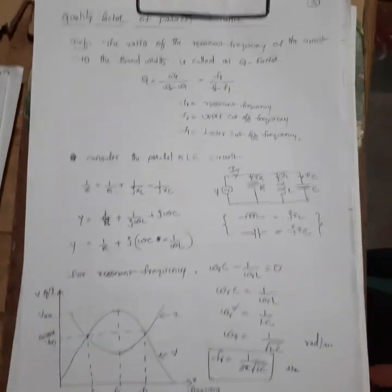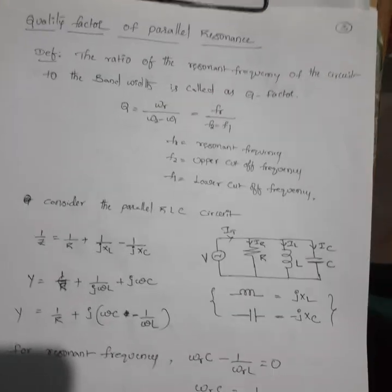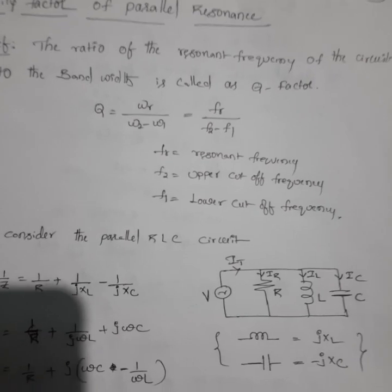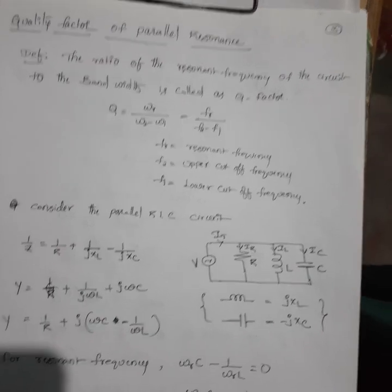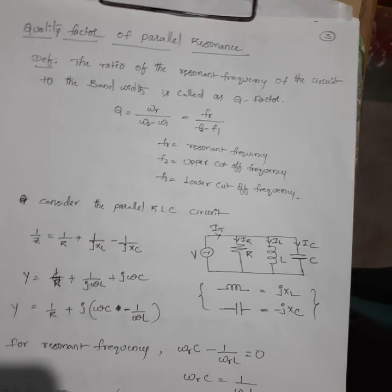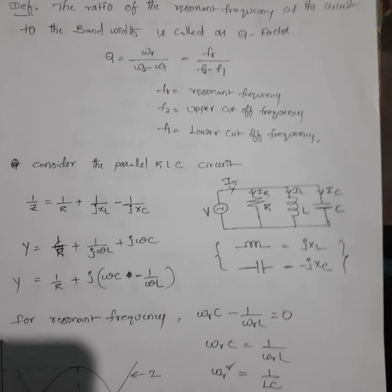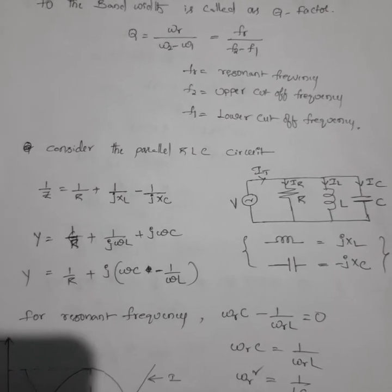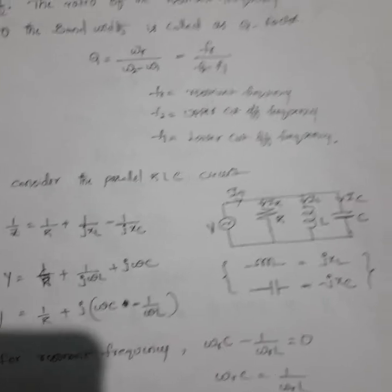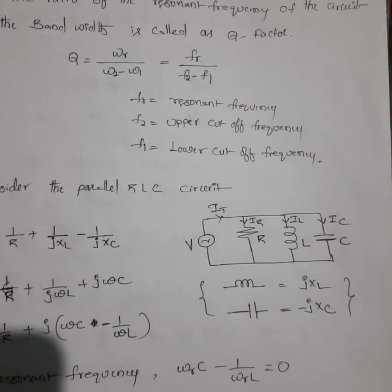Now, how to calculate the quality factor of any circuit. The quality factor is defined as the ratio of the resonant frequency to the bandwidth of the circuit. The resonant frequency is the frequency under resonance condition where the imaginary term equals zero, i.e., X_C equals X_L. The bandwidth is simply the difference between the upper cutoff frequency and lower cutoff frequency — that is, ω₂ minus ω₁.